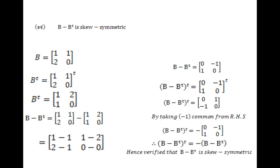To check skew-symmetry, we will take the transpose of B minus B^T. The first row of the matrix B - B^T is converted into the first column of the transpose matrix. The second row, which is [1, 0], becomes the second column. So the new transpose matrix is [0, 1; -1, 0]. Now compare B - B^T, which is [0, -1; 1, 0], with the transpose we just computed, [0, 1; -1, 0].